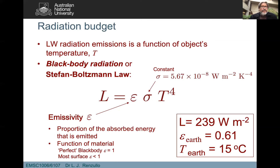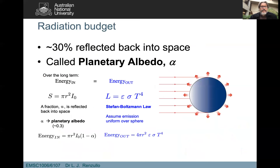Soil surfaces have an emissivity of about 0.9 — so 90 percent of what Earth's soil surfaces absorb, they re-emit. For the Earth as a whole, the emissivity is about 0.61. Given that emissivity and an average Earth temperature of about 15 degrees Celsius, we get a longwave radiation component leaving the Earth of 239 watts per square meter — energy in equals energy out.